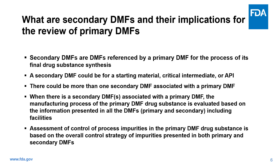What are secondary DMFs and their implications for the review of primary DMFs? Secondary DMFs are DMFs referenced by primary DMFs for the process of final drug substance synthesis. A secondary DMF could be for a starting material, critical intermediate, or API. In some cases, there could be more than one secondary DMF associated with the primary DMF. When there is a secondary DMF associated with the primary DMF, the manufacturing process of the primary DMF drug substance is evaluated based on the information presented in all the DMFs — both primary and secondary — including facilities.